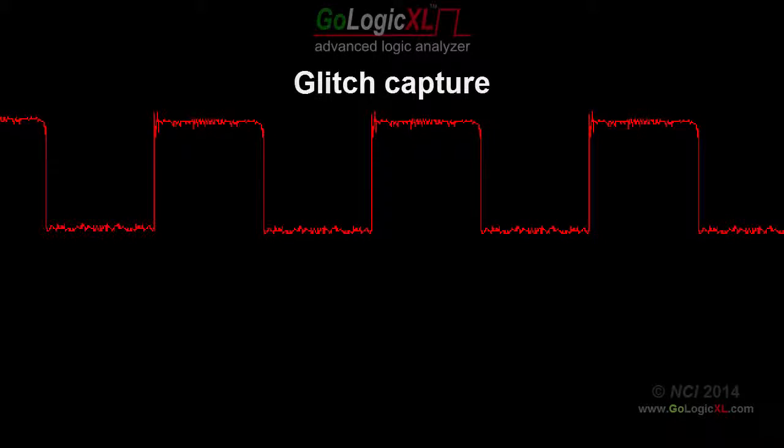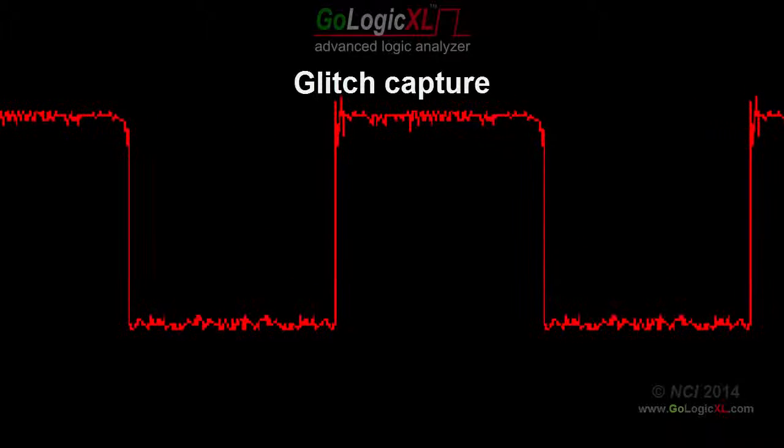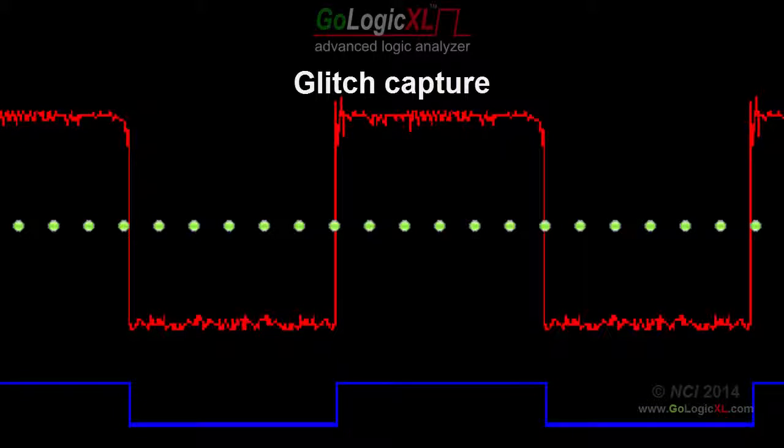A glitch has a specific definition for a logic analyzer. It's not an unusually narrow pulse in the waveforms. Instead, a glitch occurs when the signal passes through the threshold voltage in between two sample points.